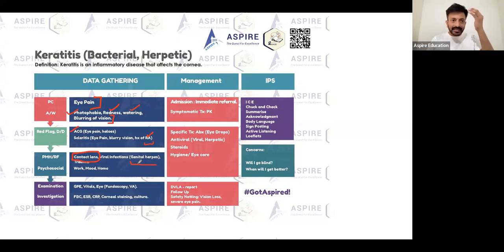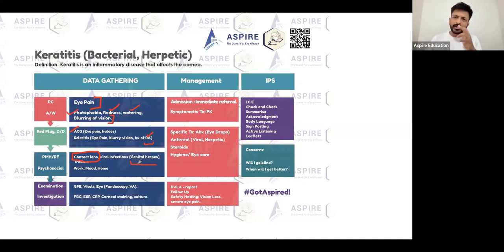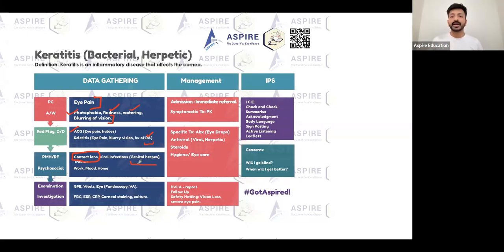In the first couple of minutes you form your idea — looking at keratitis or scleritis. When there's no history of connective tissue disorder, it looks like keratitis. You need to ask about contact lens use, any previous history of cold sores, and history of genital herpes — these are the most important points.